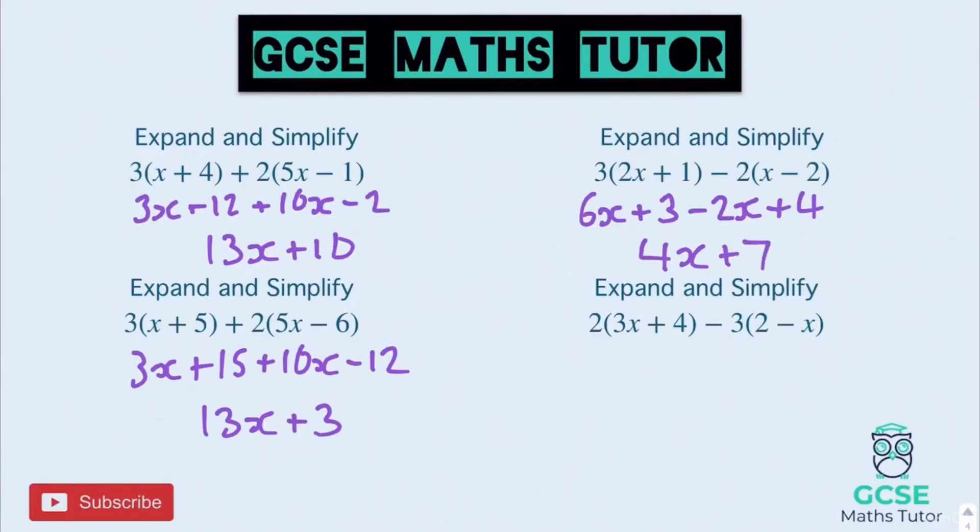And then on to the last one here. 2 times 3x is 6x. 2 times 4 is 8. And then we've got the negative again. So negative 3 times 2 is negative 6. And negative 3 times negative x is positive 3x. And again just tidying this up, 6x and 3x makes 9x. And 8 take away 6 is 2. So 9x plus 2. And there's your four answers.